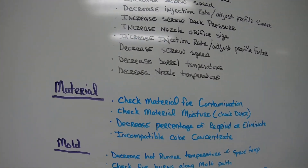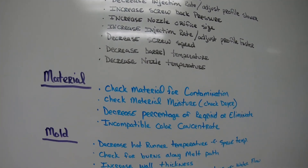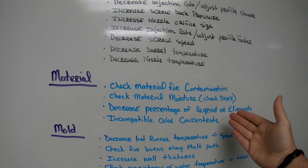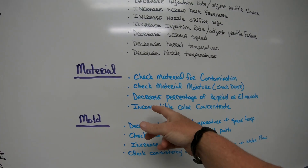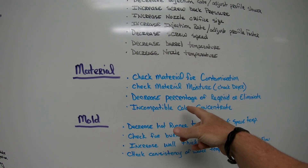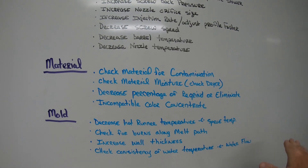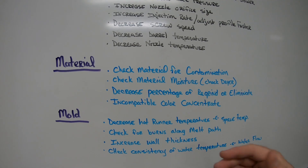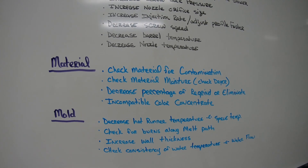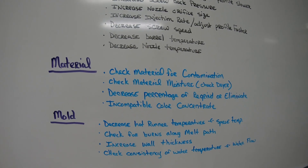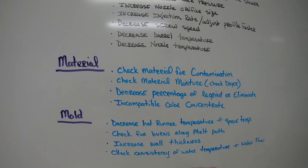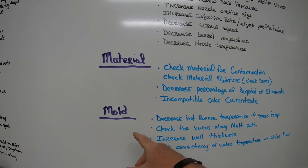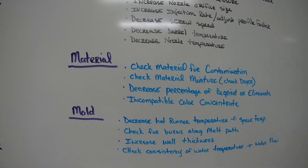For the material side: check the material for contamination, check material moisture by inspecting the dryer and making sure it's working correctly, decrease the percentage of regrind or eliminate it completely, and check that the color concentrate is compatible with the virgin material — the concentrate you're using may not be compatible.